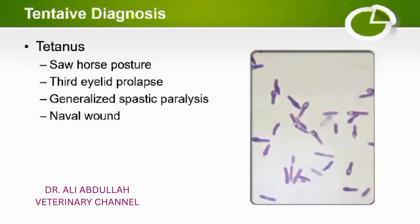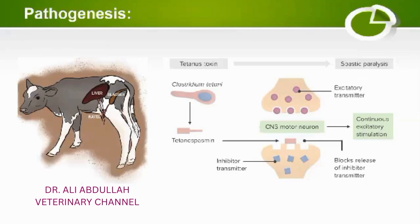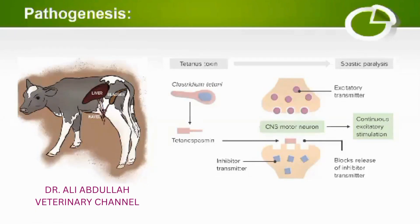These toxins travel along the nerves and finally reach the spinal cord. After reaching the spinal cord, they inhibit the release of inhibitory transmitters. Normally, there are two types of transmitters: excitatory transmitters, responsible for causing muscle contraction, and inhibitory transmitters, responsible for causing muscle relaxation. When tetanus bacteria enter through the navel, they produce a toxin called tetanospasmin, which travels along the nerves to the spinal cord.